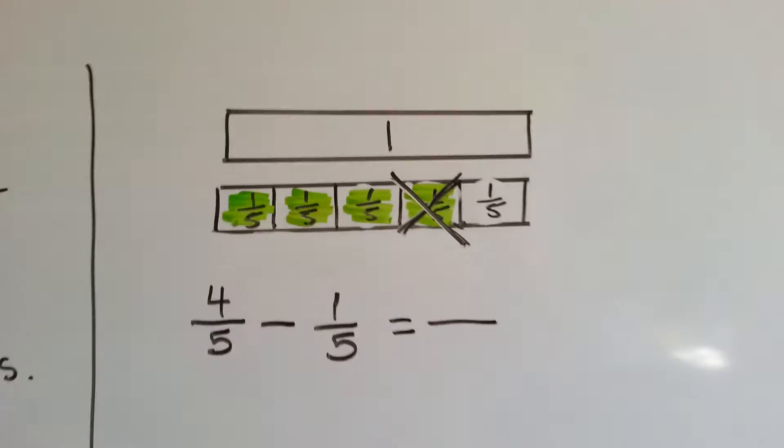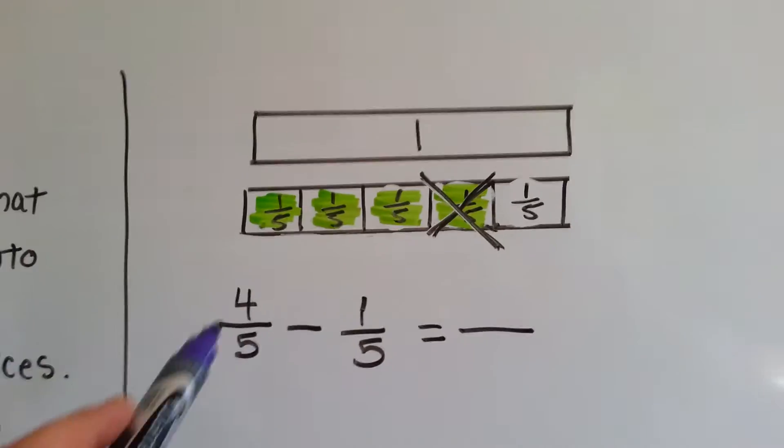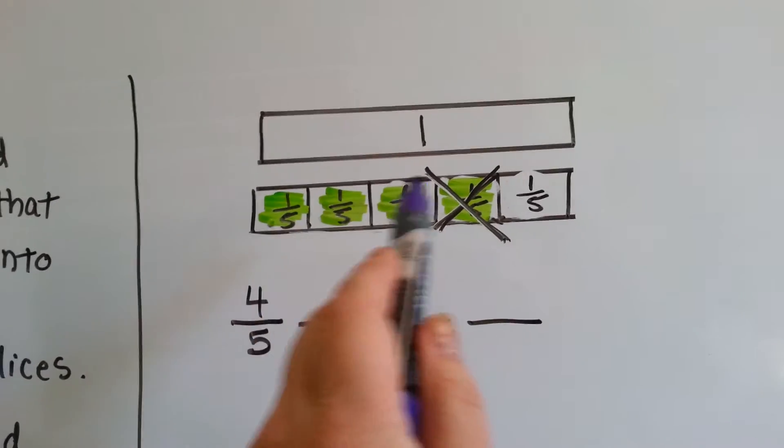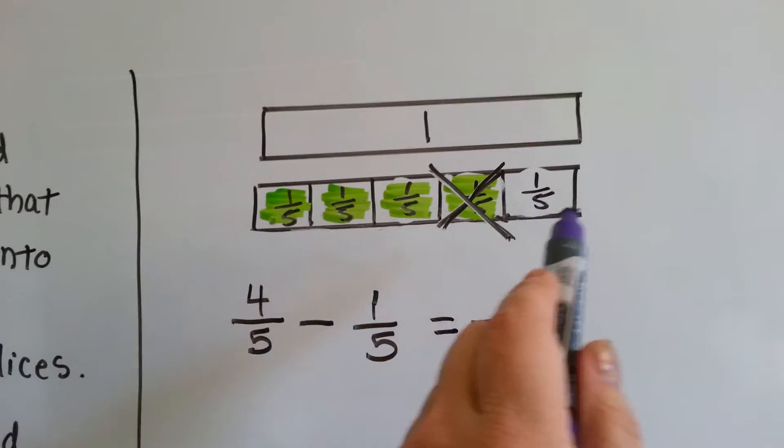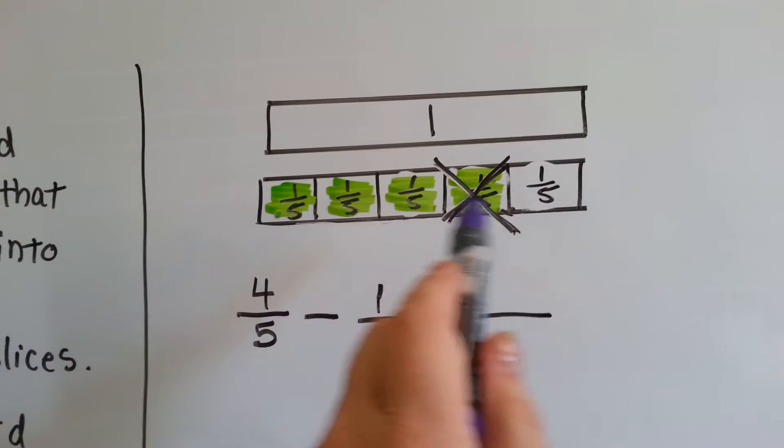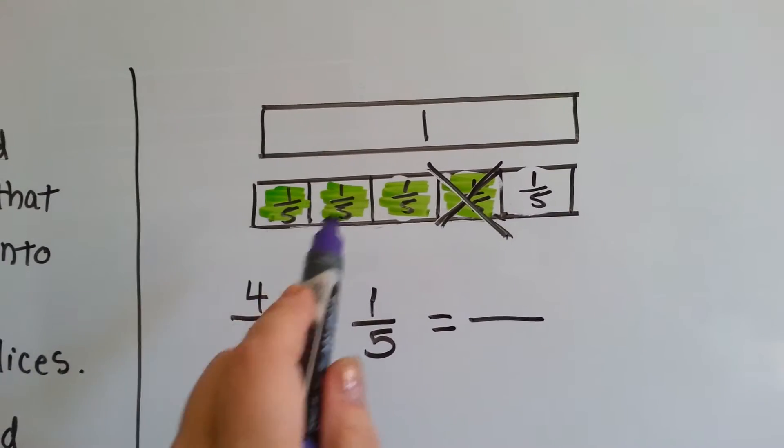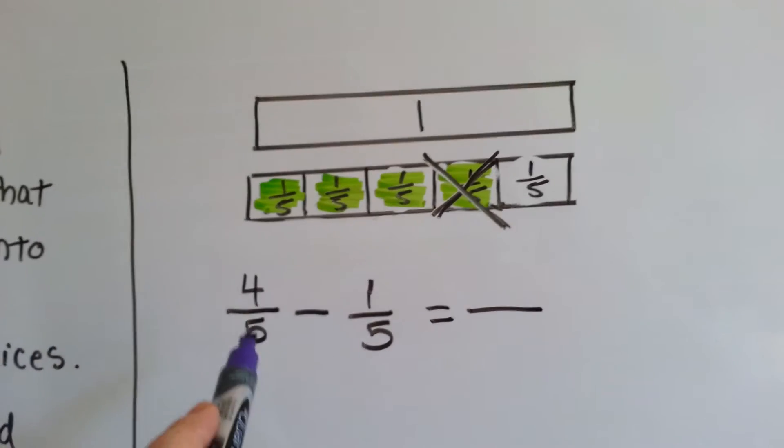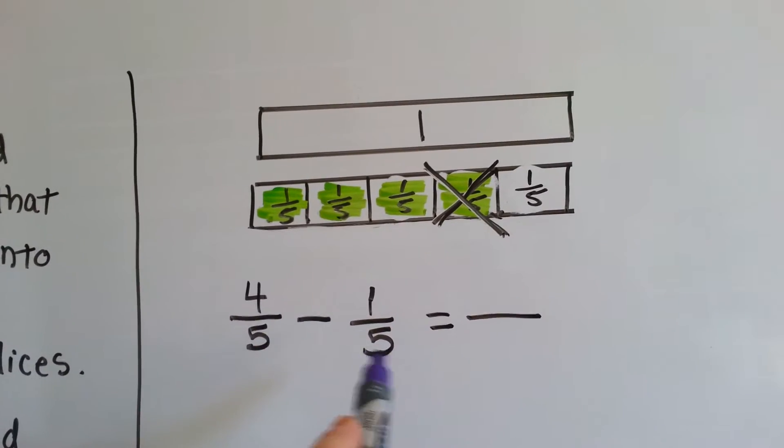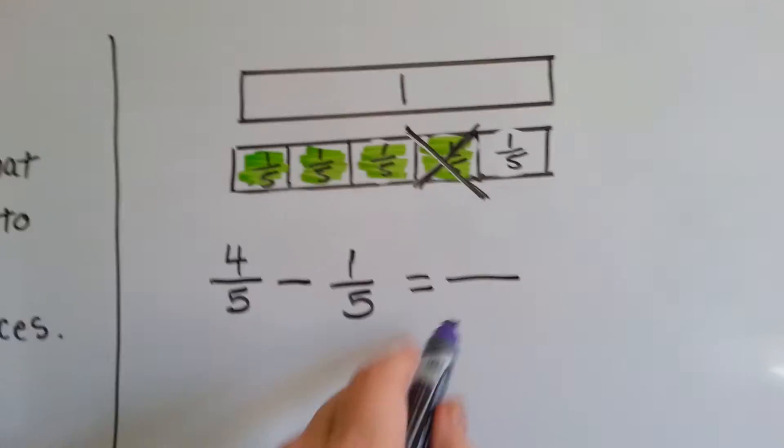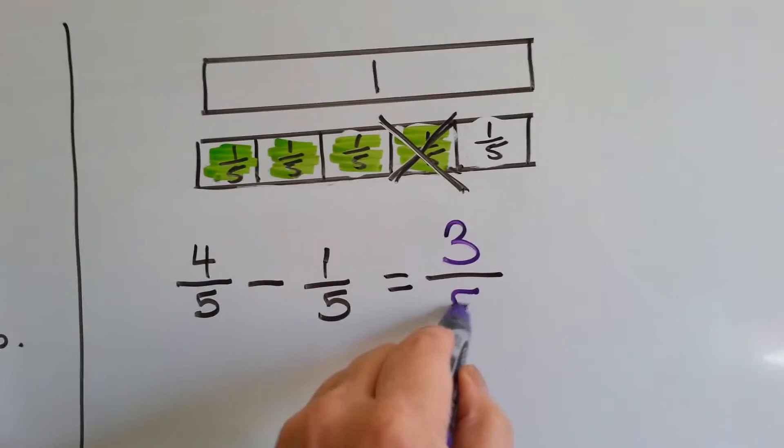So let's look at another one. We have four-fifths minus one-fifths. Here's what a whole one looks like. If it were split into fifths, it would look like this, and the green ones would be the four-fifths. If we took one of them away, we would have three left over. What we're doing is sliding the denominator across because they're all fifths, and doing four take away one equals three-fifths.